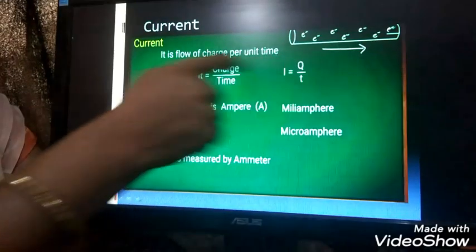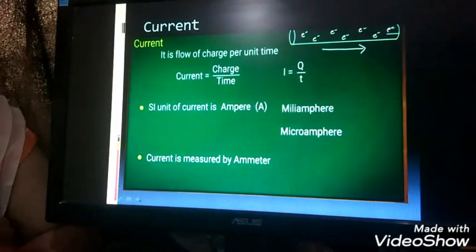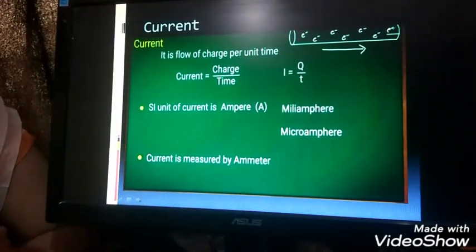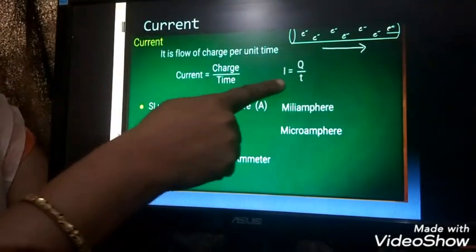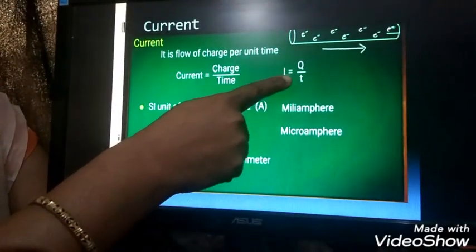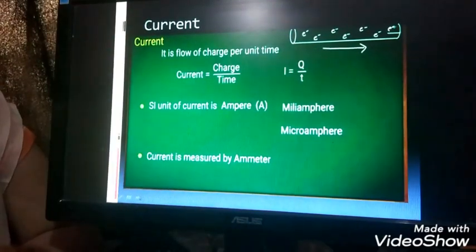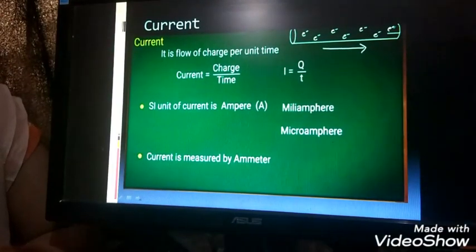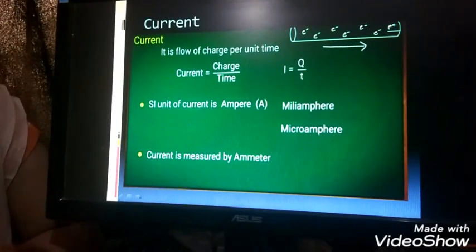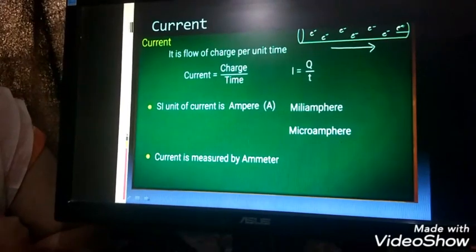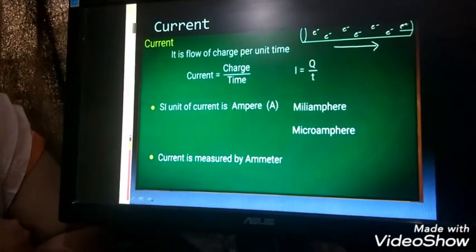This flow of charge per unit time is known as the current. It is represented by the letter I which is equal to Q upon T. And the SI unit of current is ampere.